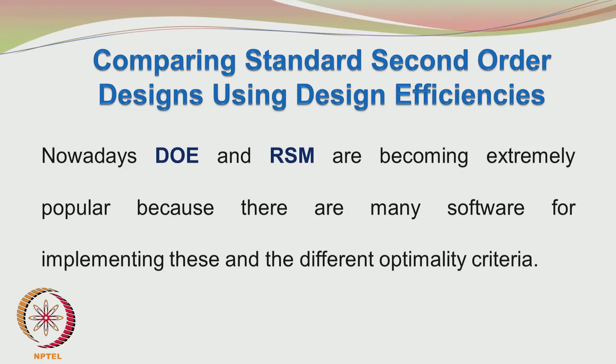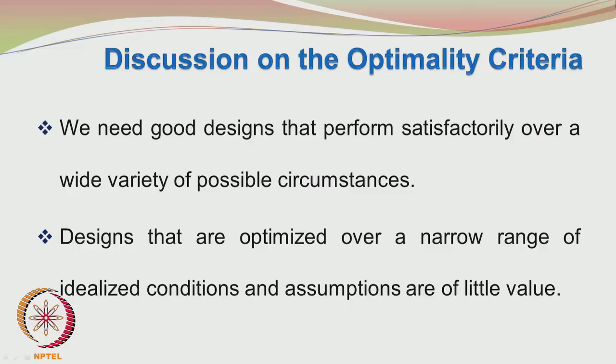There is no one single optimality criterion — there are many, and we can choose the one closest to our expectation. The design of experiments and response surface methodology are becoming popular due to software availability, and it is not difficult to apply different optimality criteria. We have a lot of flexibility in choosing a particular experimental model. We need good designs that perform satisfactorily over a wide variety of possible circumstances; designs optimized over a narrow set of idealized conditions are of little value.